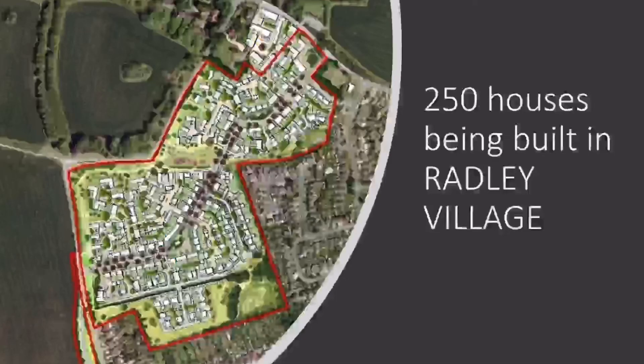An example of this is Radley village, which is a really nice place to live with lovely scenery. People are moving there, so houses are being built to meet the demand of counter-urbanisation. People who used to live in Oxford, Reading, or London are moving out to the countryside to get those benefits.